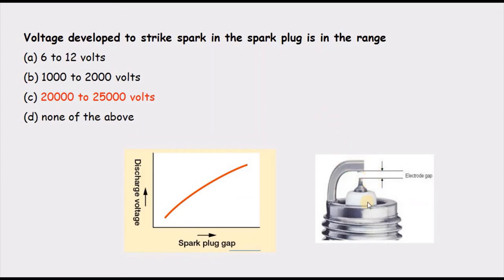We have a spark plug to produce the spark needed to burn the mixture. There is a homogeneous mixture inside the engine, and in order to burn that mixture, the spark must provide a temperature of around 280 to 300 degrees, because the self-ignition temperature of petrol is in that range.